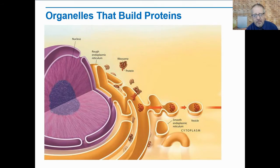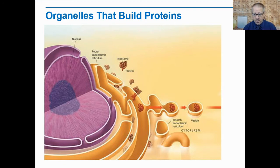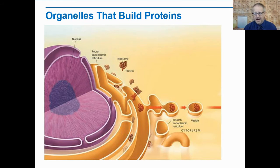Proteins are very important — they carry out most of the essential functions of living things. This includes synthesizing other macromolecules like lipids and carbohydrates. And a big part of the cell is devoted to the production and distribution of proteins. Here we have a large picture, and we're going to see portions of it as we progress through this information.